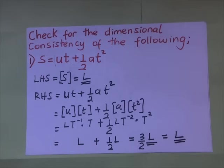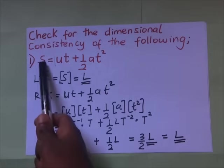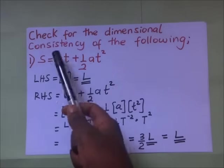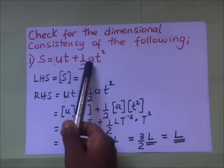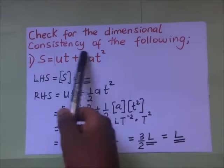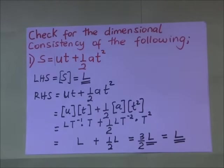This is Kisembo Academy and thanks for tuning in. Right in front of us we have an equation: s is equal to ut plus half at squared. Most of you know it as the equation of motion. We all know that s = ut + ½at² is a correct equation, but we want to use dimensions of a physical quantity to check whether it is consistent.